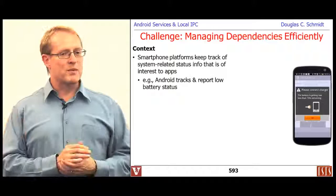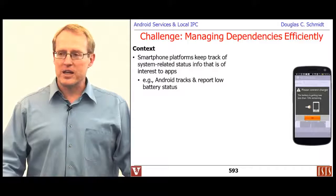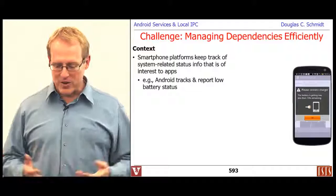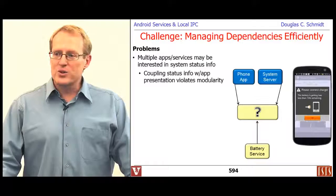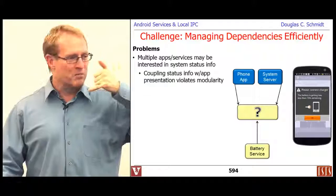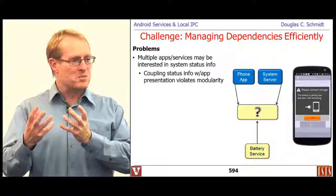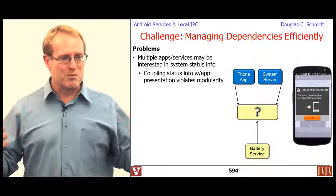Here's a way to think about the need for this pattern. There's a bunch of system-related status information kept by Android that is often useful to applications — for example, Android middleware and lower-level drivers keep track of battery levels. If you're running low on battery, you want to know so you can plug in. The issue is: how do apps find out the battery is low? The phone app, for instance, really shouldn't be tightly coupled to the battery status module.